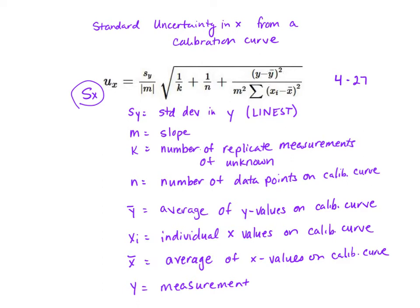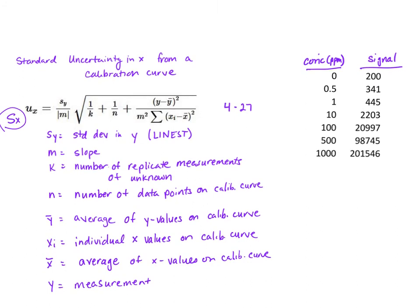n is the number of data points on a calibration curve. So if we look here, say we have a calibration curve where we have one, two, three, four, five, six, seven points along our calibration curve.